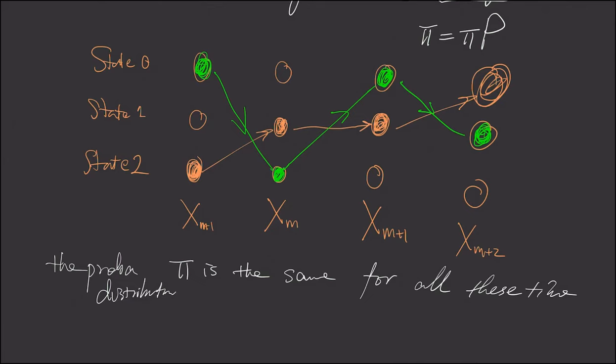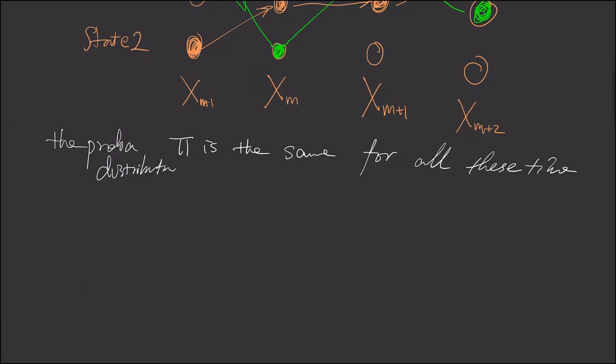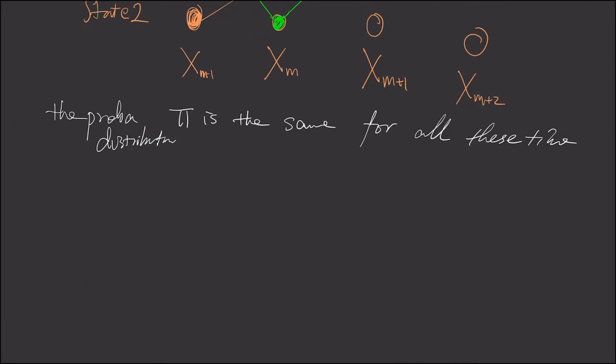So here I'm going to write down the claim. First, we know that the original Markov chain is essentially X_{m-1}, X_m, X_{m+1}, etc.